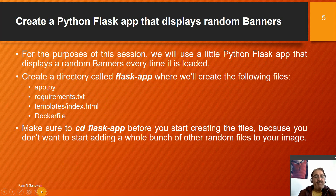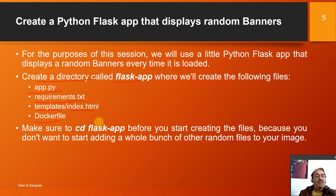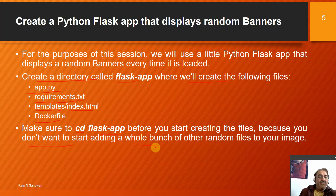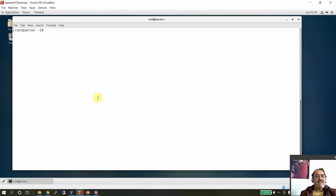We'll use a little Python Flask app that displays a random banner every time it is loaded. For this, create a directory called flask-app where we'll create the following files: app.py, requirements.txt, and under a templates directory, index.html, plus a Dockerfile. Make sure you work inside the flask-app directory before creating files so you don't add unrelated files to your image.